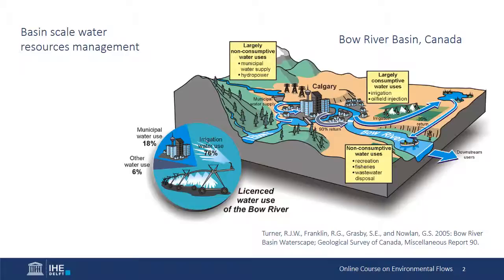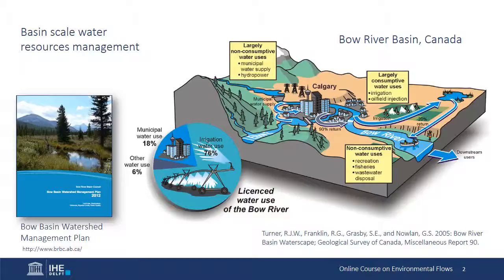Unlike the Murray-Darling Basin Authority, which has legal responsibility for planning and implementing water resources management, the Bow River Basin Council is an advisory body, and its broad mandate is to promote awareness about the basin's water issues, to foster cooperation among agencies, and provide communication links among governments, interested groups, and the general public. Diverse approaches to basin-scale water resource management exist around the world, but most are contained within basin management plans.